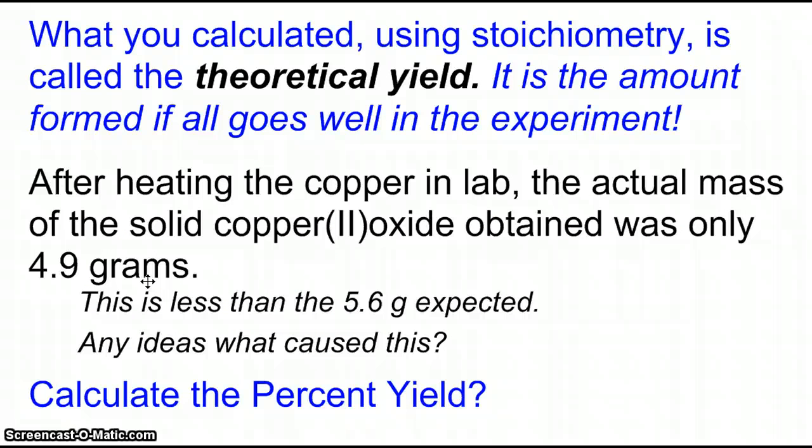So what we've been calculating using stoichiometry is called the theoretical yield. So taking the mass values and the problems, we can calculate the mass of a particular product formed. And by thinking about the meaning of the word yield, it does imply that we're talking about the amount of product formed. Theoretical means if everything goes perfectly.